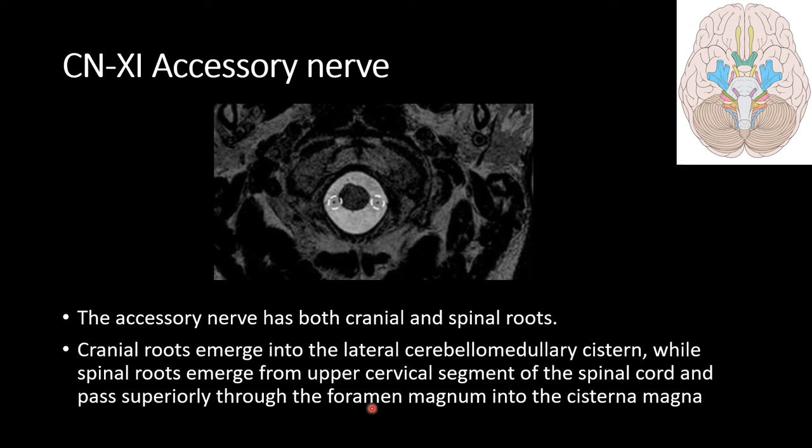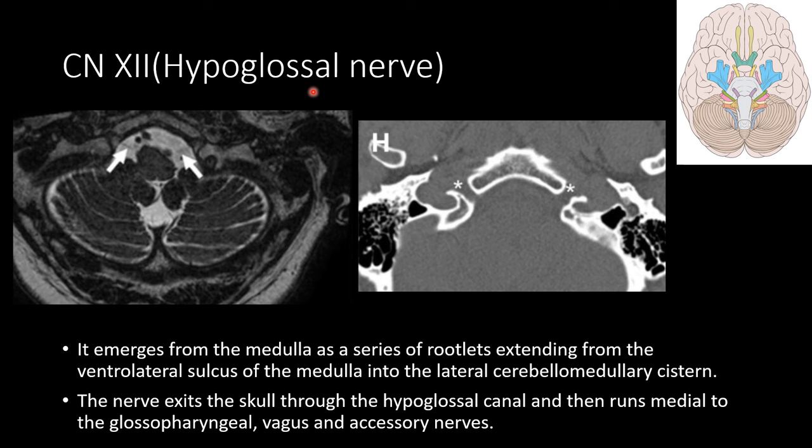The 12th, or the hypoglossal nerve, emerges from the lateral medulla as a series of rootlets extending from the ventrolateral sulcus of the medulla into the lateral cerebellomedullary cistern. The nerve exits the skull through the hypoglossal canal and then runs medial to the 9th, 10th, and 11th cranial nerves. Thank you.